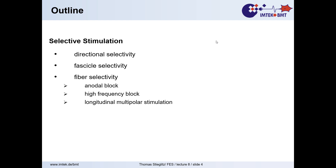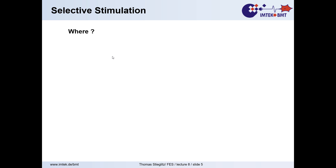The exciting thing for me is that all those tricks were found out in the 1970s and 80s, and then researchers seem to have given up until finding something that really works. With selective stimulation, we have some questions to ask ourselves: Where do I like to stimulate? Which electrodes do I need? And what is the use of it? You should always ask what your particular purpose is in that project or research question.